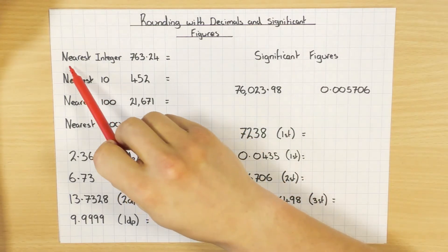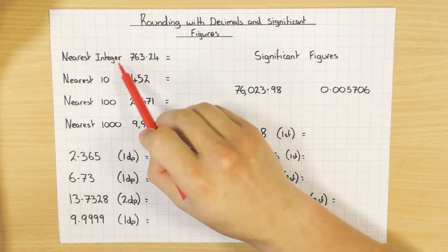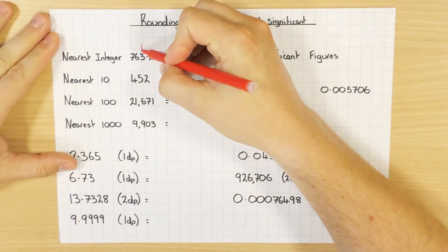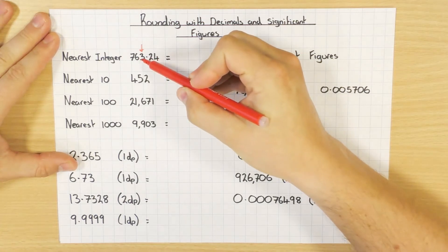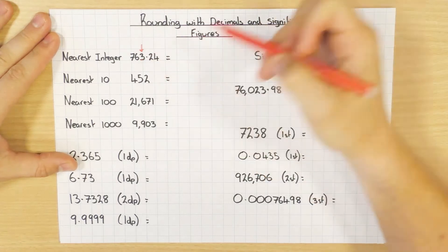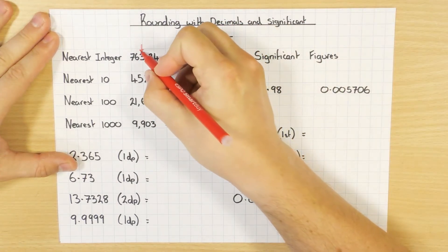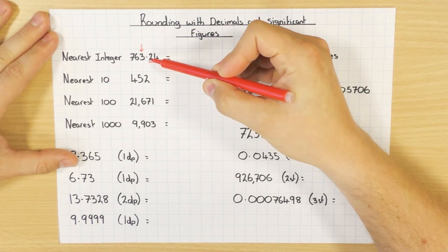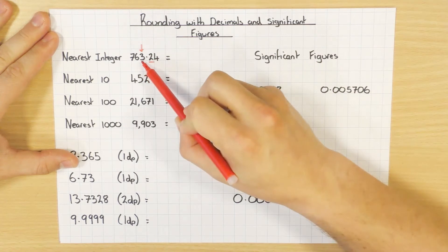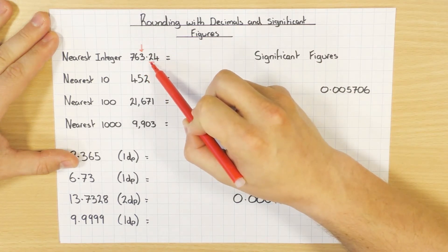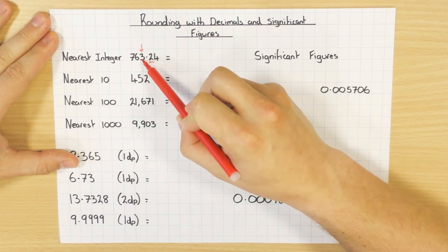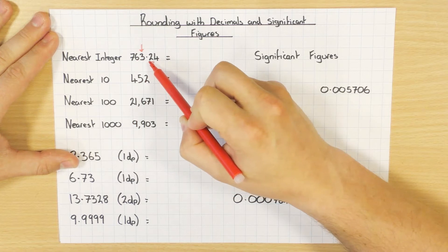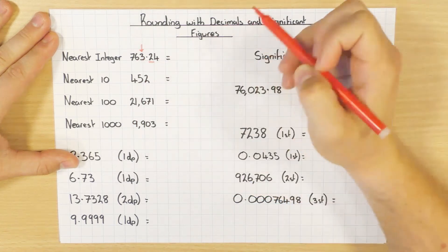First example: round this number to the nearest integer. Lots of people forget what 'integer' means — it just means the nearest whole number. I'm going to put an arrow above the units column, because that's where the decimal point is, so that's the first whole number. When rounding, I look at the next digit: if it's below five I round down — the number stays the same; if it's five or above I add one. Round down does NOT mean take one away, it means it stays the same. This digit is two, so I round down and the answer is 7.